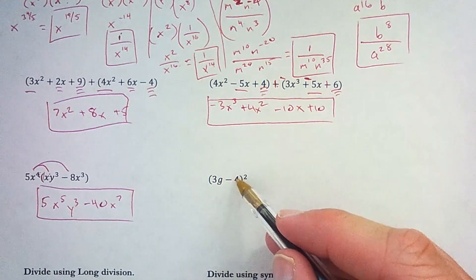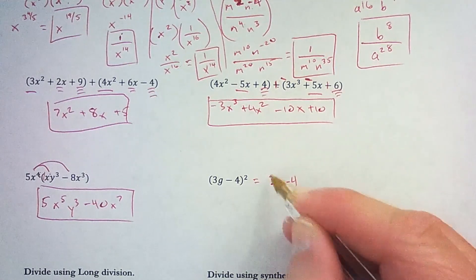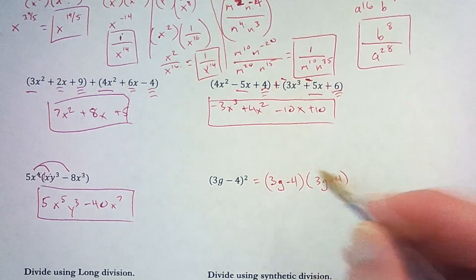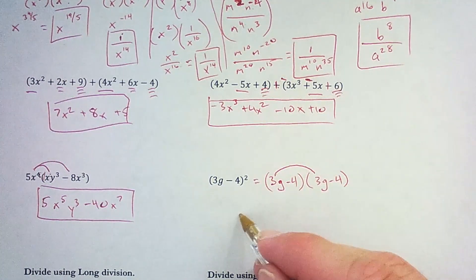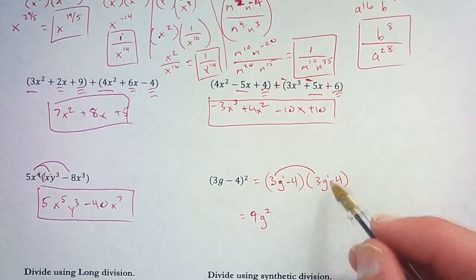And then 3g minus 4 squared. That is the same as 3g minus 4 times 3g minus 4. So I'll distribute this 3g. 3g times 3g is 9g squared. That's 1 and 1, adds up to 2.